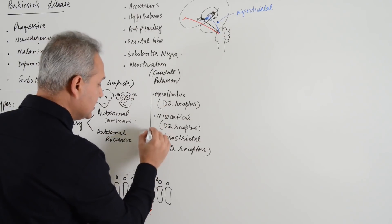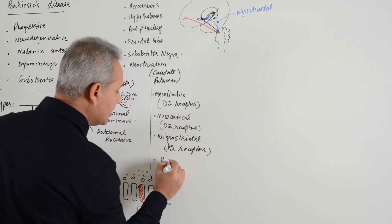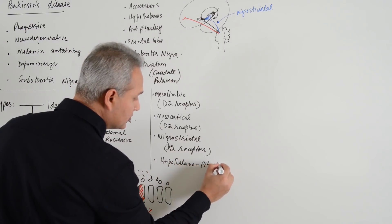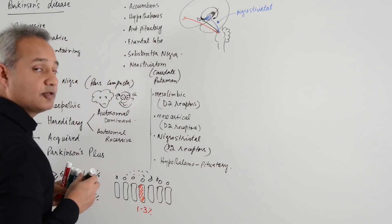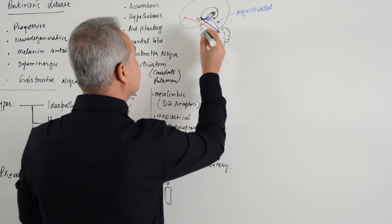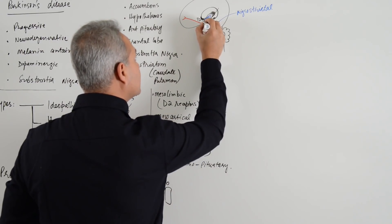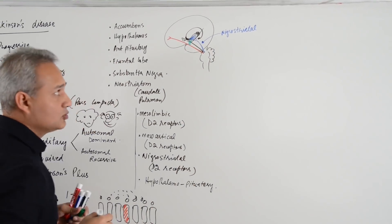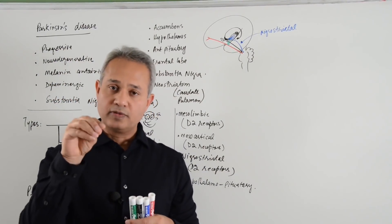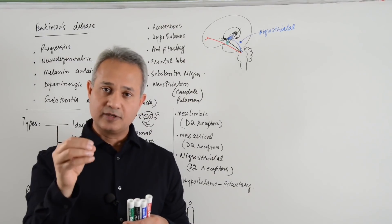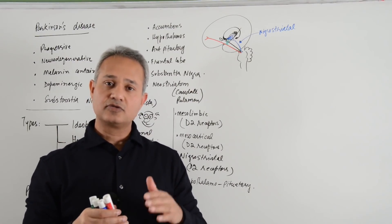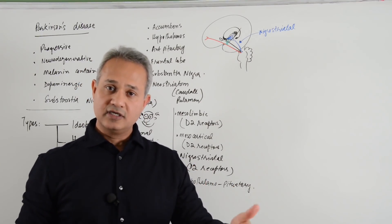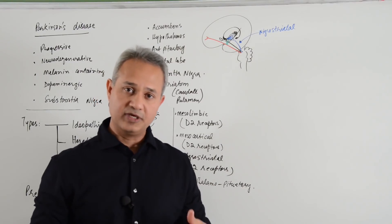And then, there is the hypothalamopituitary pathway. This is the pathway where the hypothalamus is secreting dopamine onto the median eminence for the anterior pituitary, and the function of this dopamine is to tonically inhibit prolactin. Prolactin when not inhibited would cause milk formation.